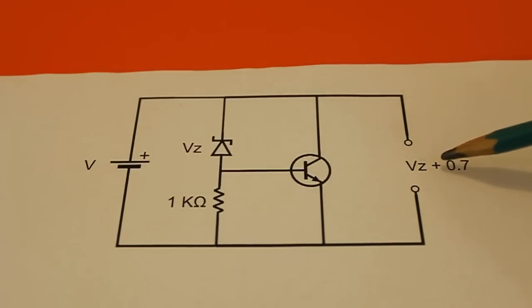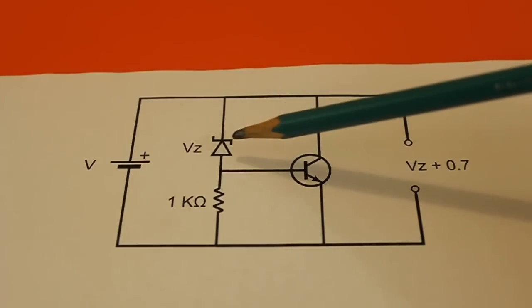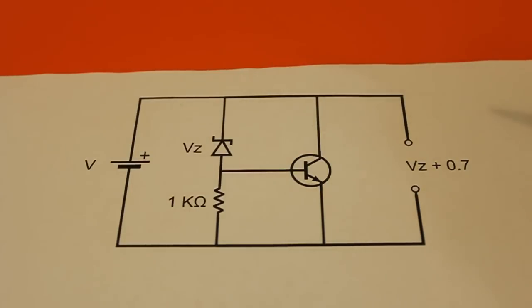The output voltage is 0.7 volts in excess of the Zener voltage. So you have to take into account this extra 0.7 volts when you design your circuit. Any NPN power transistor will work for this circuit.